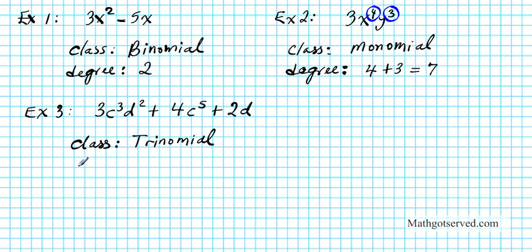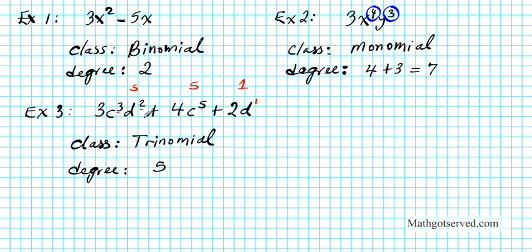So now what's the degree of this trinomial? We're going to look at the powers of the variables and determine which one has the biggest degree. This term has degree 1. The degree of this term is 5. And then the degree of this term is 3 plus 2, which is 5. So we have an overlap of 5 and 5. The degree of this polynomial is simply 5 — you just take the highest power.